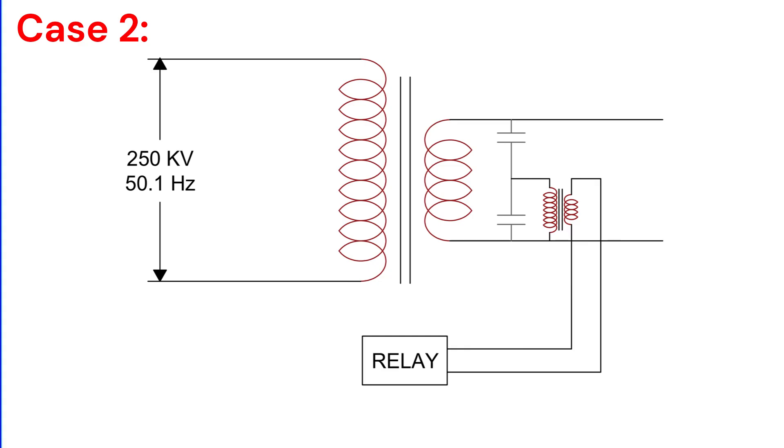So, what's the takeaway? Tap changes play a vital role in preventing overflux tripping, but only if the voltage signal is taken from the secondary side PT. This ensures the transformer operates safely without compromising protection.